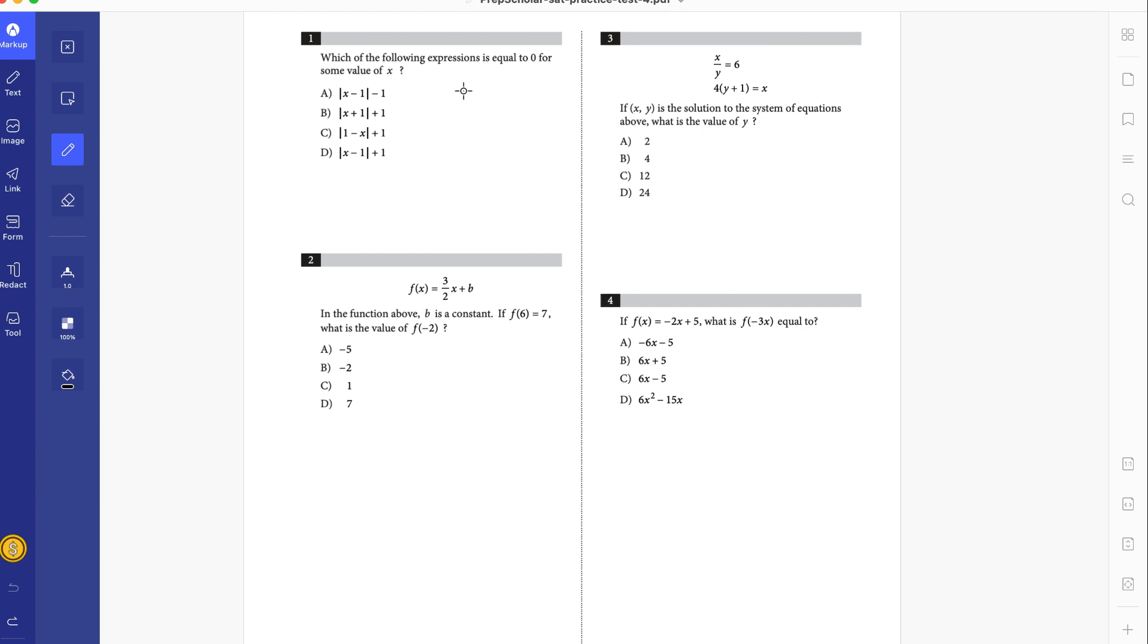For the first question, it's asking which of the following expressions is equal to zero for some value of x. Let's do x equals zero. We're going to plug in x equals zero into every equation and see if we can get zero. There's no point graphing these equations because that's too much work. So let's plug in zero. We get 0 minus 1, which is negative 1 absolute value, which is 1. So 1 minus 1 is zero. There you go. We tried A and we got it right. We don't have to try B, C, and D. We got A and we're done.